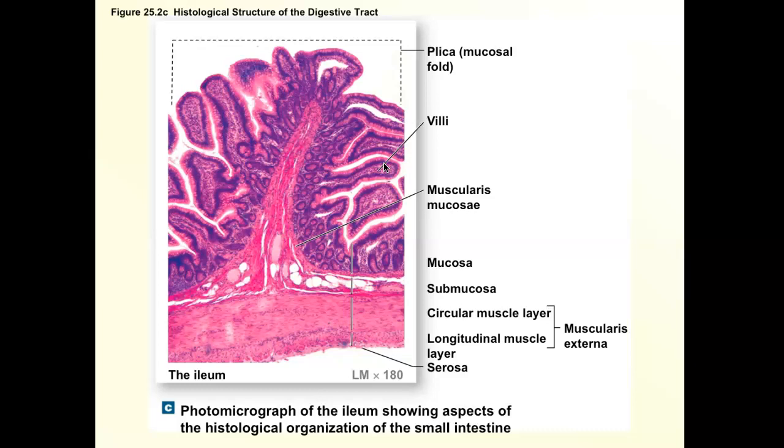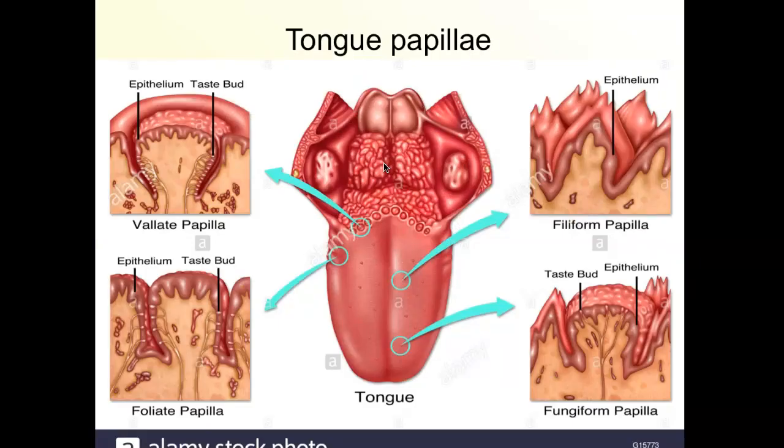Now let's look at the alimentary canal starting with the mouth. In the mouth we have our tongue, which is skeletal muscle — you can voluntarily control it for eating and talking. The tongue has two attachment sites: the first is called the lingual frenulum, which is underneath your tongue — that line you see if you lift your tongue up, attaching it to the mucosa of the bottom of your mouth.